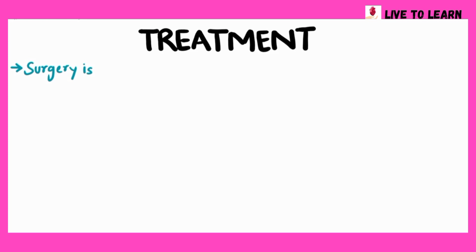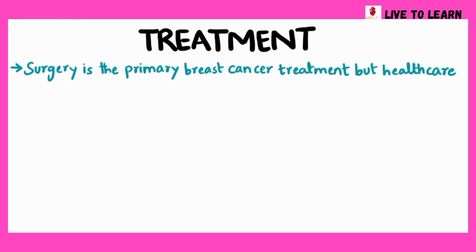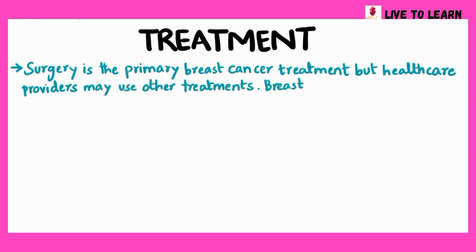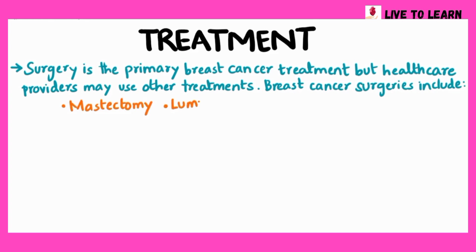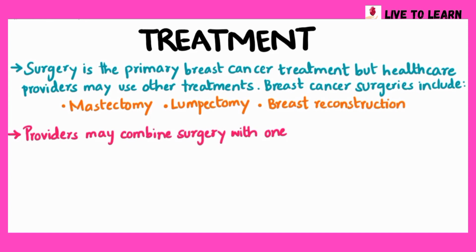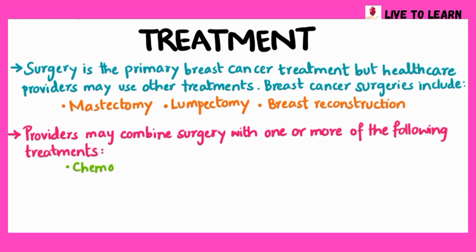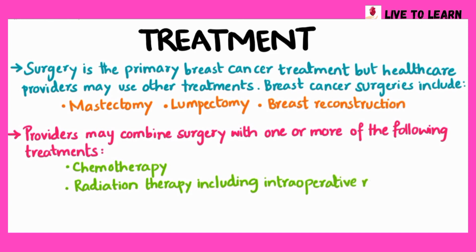Surgery is the primary breast cancer treatment, but healthcare providers may use other treatments as well. Breast cancer surgeries include mastectomy (removal of the breast), lumpectomy (removal of a lump), and breast reconstruction surgery. Providers may combine surgery with chemotherapy, radiation therapy including intraoperative radiation therapy, immunotherapy, and hormone therapy.